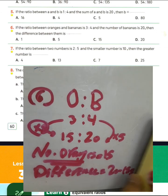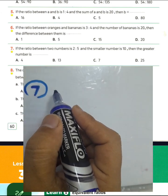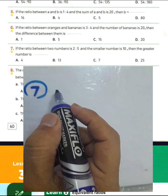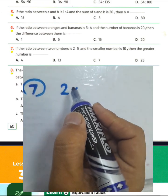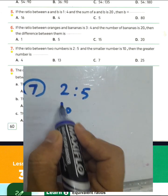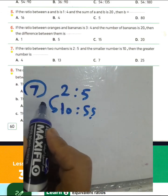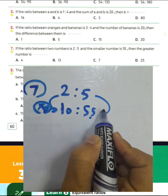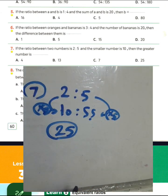Question number seven: the ratio between two numbers is two to five, and the smaller number is ten — find the greater number. We write the ratio two to five, and the smaller is ten. Since two multiplied by five equals ten, then five multiplied by five equals 25. The greatest number will be 25. Choose letter D.